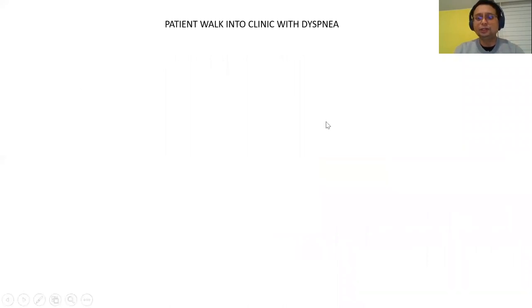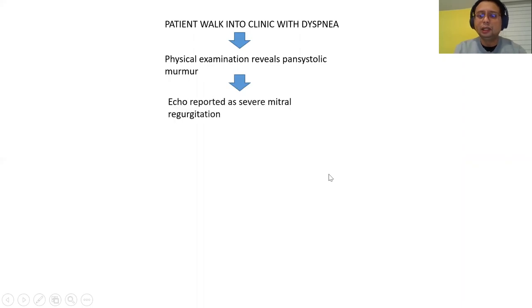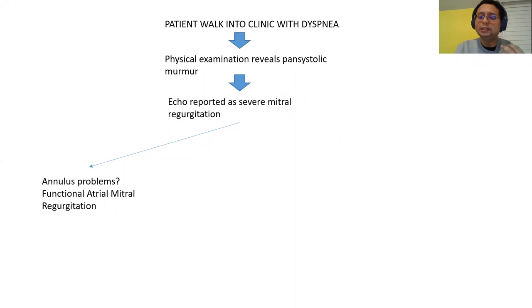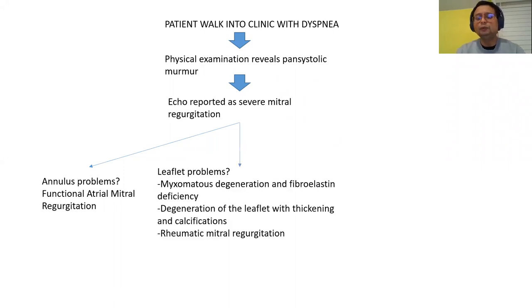Let's say a patient walks into your clinic with dyspnea, and physical examination reveals a pansystolic murmur. Echo is reported as severe mitral regurgitation. Remember, only severe mitral regurgitation warrants intervention. When you see severe MR, you need a differential diagnosis. We divide this into: annulus problem — such as chronic atrial fibrillation causing atrial dilation leading to MR, abbreviated AFMR (atrial functional mitral regurgitation); leaflet problem (primary); or ventricle problem (secondary).